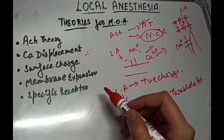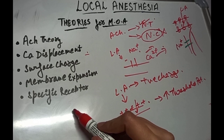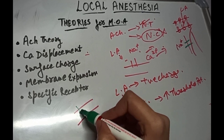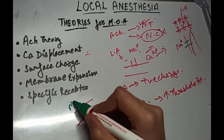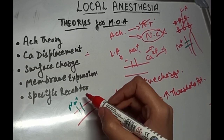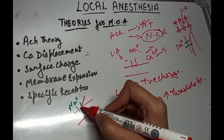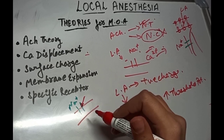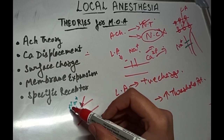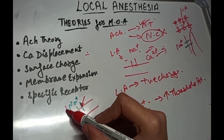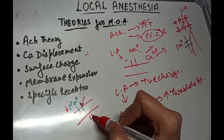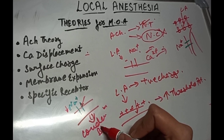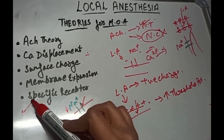The specific receptor theory is the most acceptable theory. According to this theory, the LA agent acts by binding to a specific receptor on the sodium channel in the nerve membrane. This leads to a reduction in sodium permeability, which is reduced or completely eliminated, and hence conduction is blocked. This is the most accepted theory.